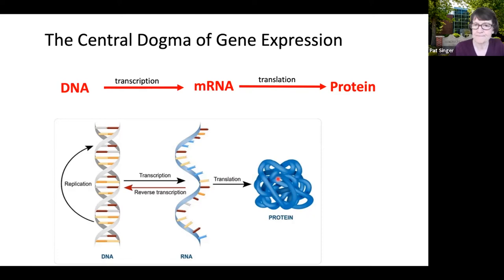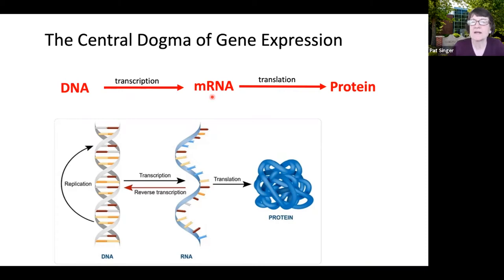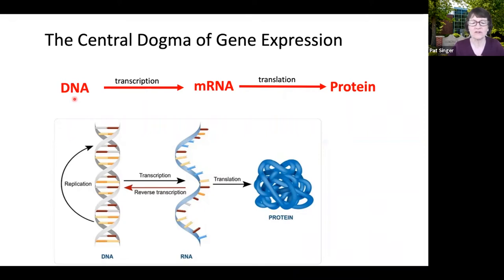This is a good time to briefly discuss COVID vaccines. Both Pfizer and Moderna are messenger RNA vaccines — the messenger RNA is artificially manufactured by a machine, codes for a piece of the spike protein, gets translated into protein, and your immune system responds. With AstraZeneca or Johnson & Johnson, you're getting DNA carried in an adenovirus. That DNA first has to be transcribed into messenger RNA, and then the messenger RNA — which codes for a piece of the spike protein — is translated into the spike protein.